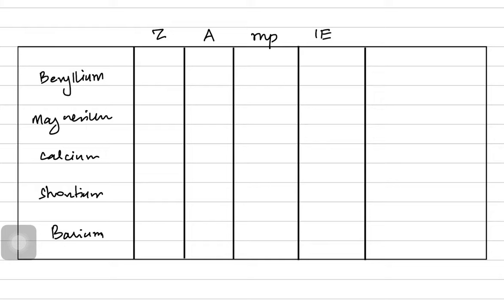Looking at their general properties, it starts with beryllium, then magnesium, calcium, strontium, and barium. We're concerned with their atomic number, atomic mass, melting point, ionization energy, and flame colors.